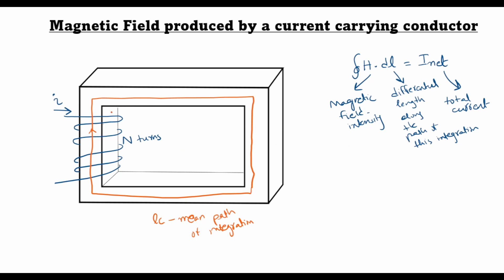You can see from this diagram that this current I crosses the mean path length N times, so the total net current would be N times I, which equals H times the mean path length LC. From here I can find the value of the magnetic field intensity as NI divided by LC.